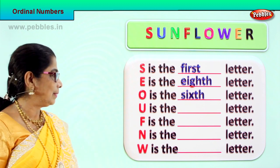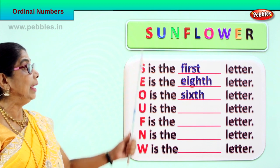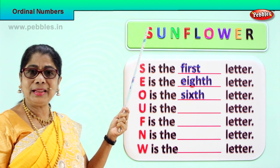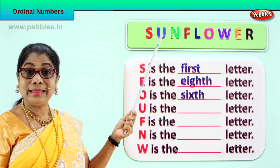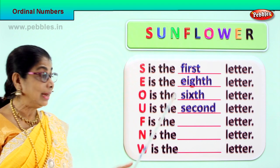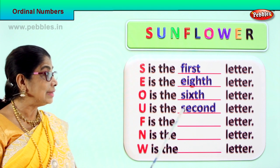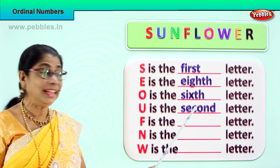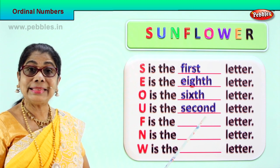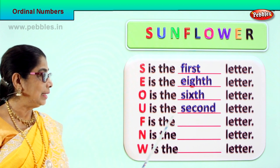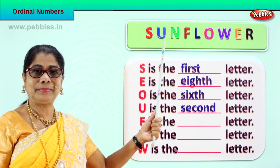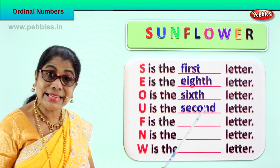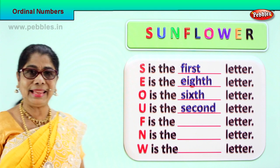Now let's take another exercise. U in sunflower — where does U come? S is first, second. In the word sunflower, U comes second. So U is the second letter. Spell second: S-E-C-O-N-D, second. U is the second letter. Good.